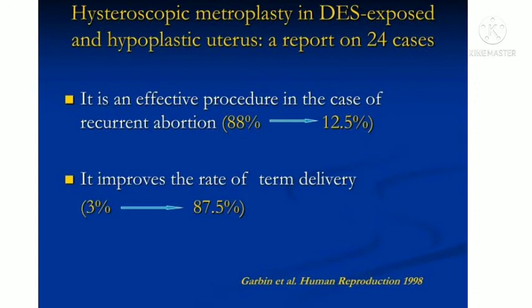Lower miscarriage rate, primary infertility, and current miscarriage rate are key outcomes. T-shaped uterus is associated with infertility and adverse pregnancy outcomes.